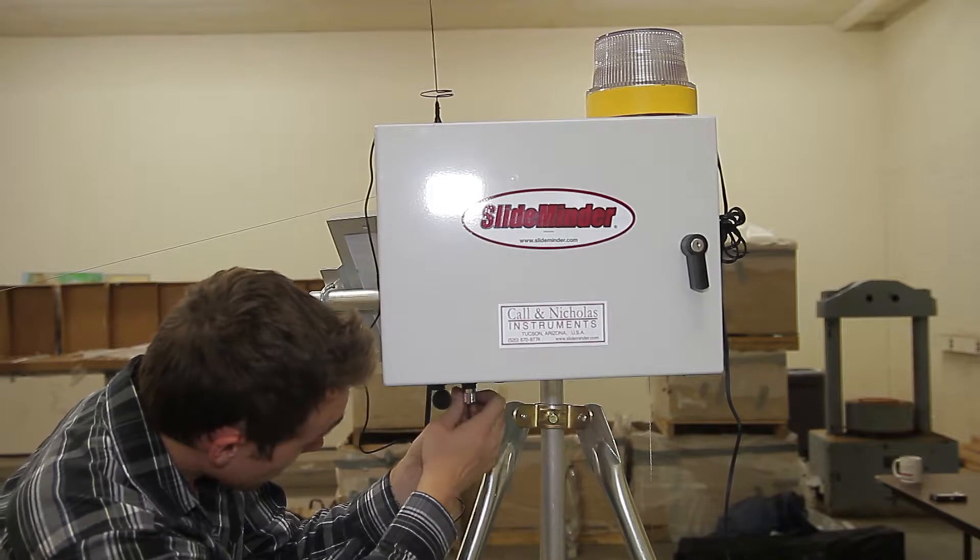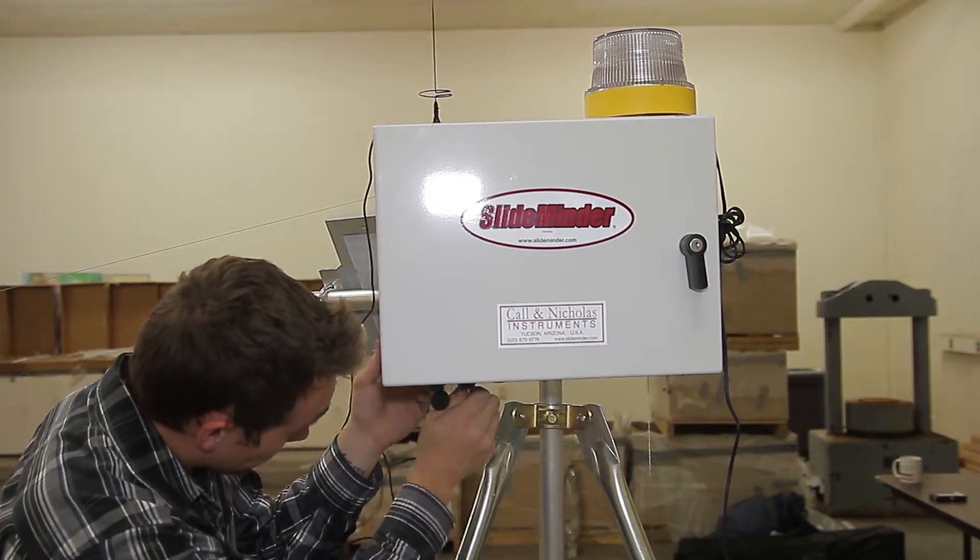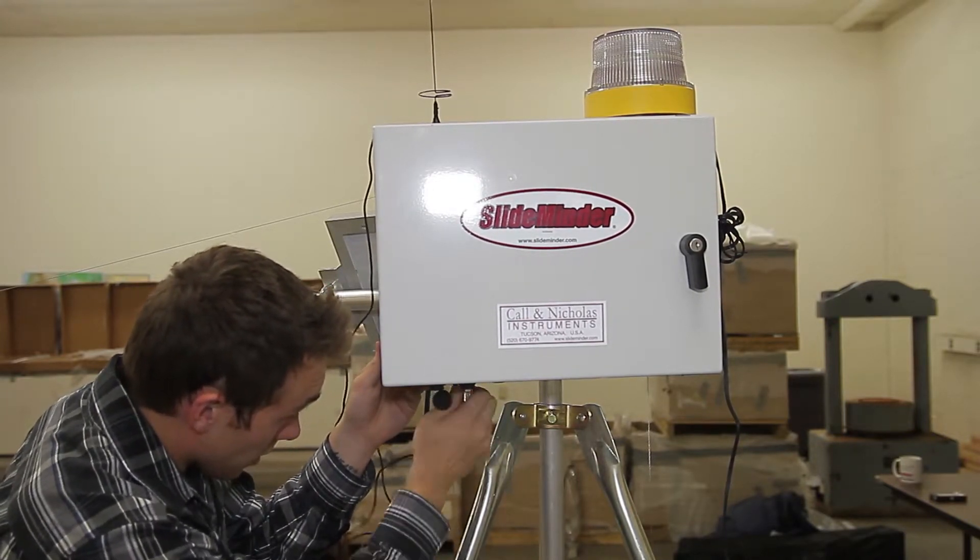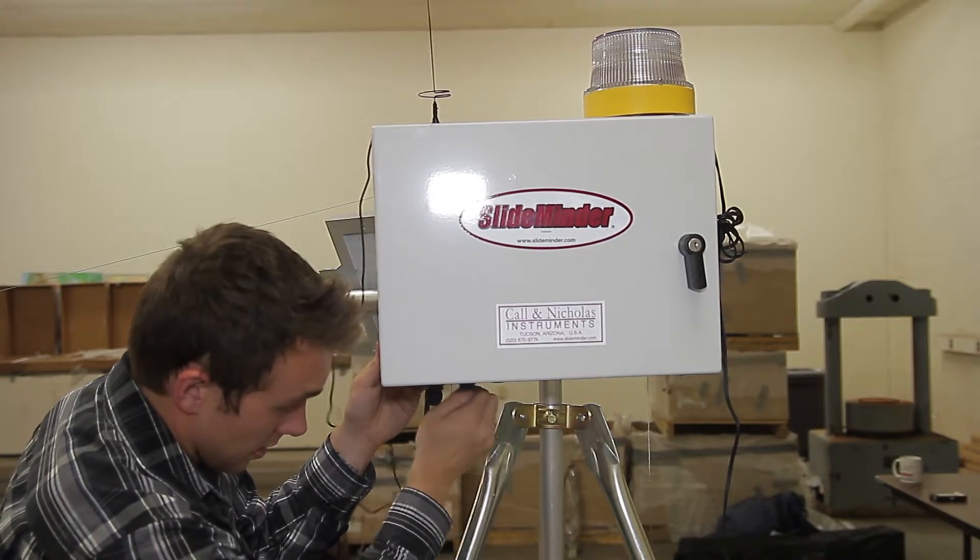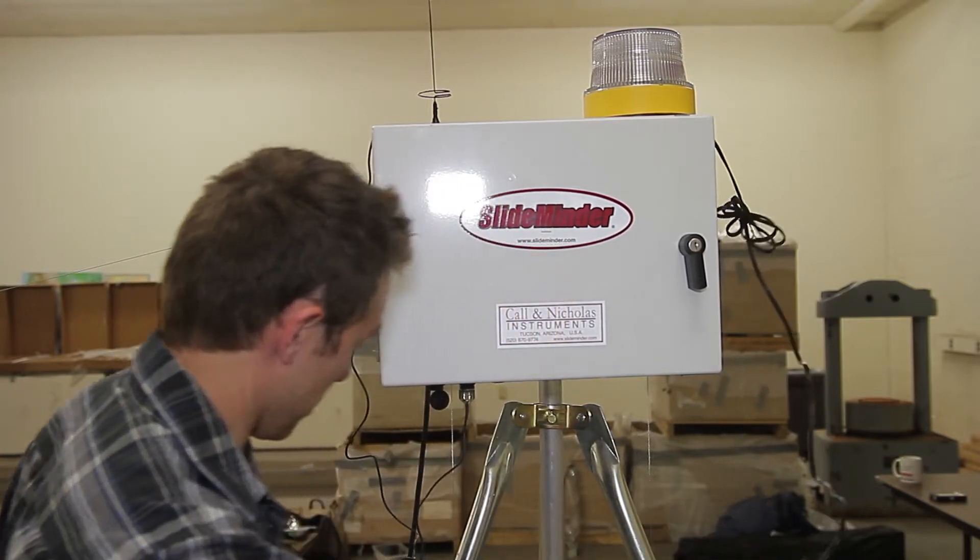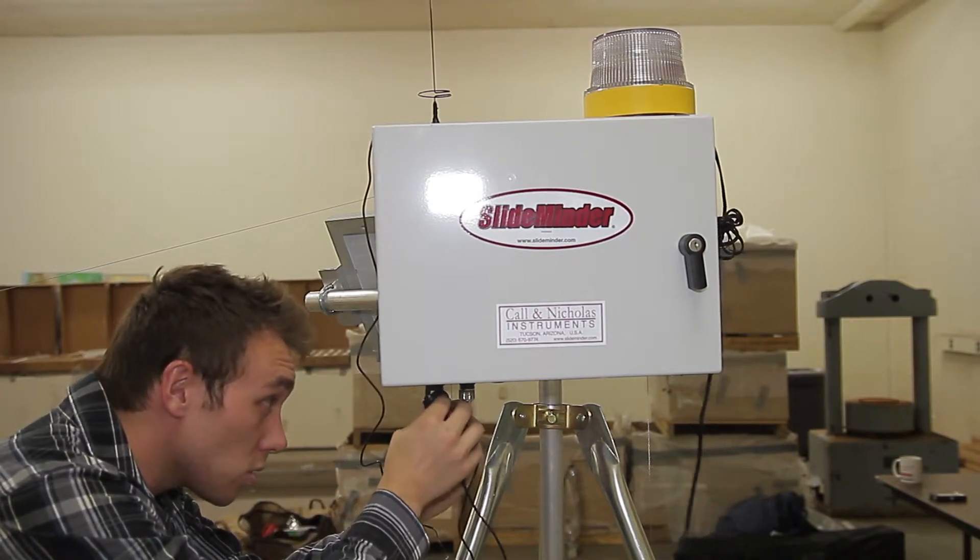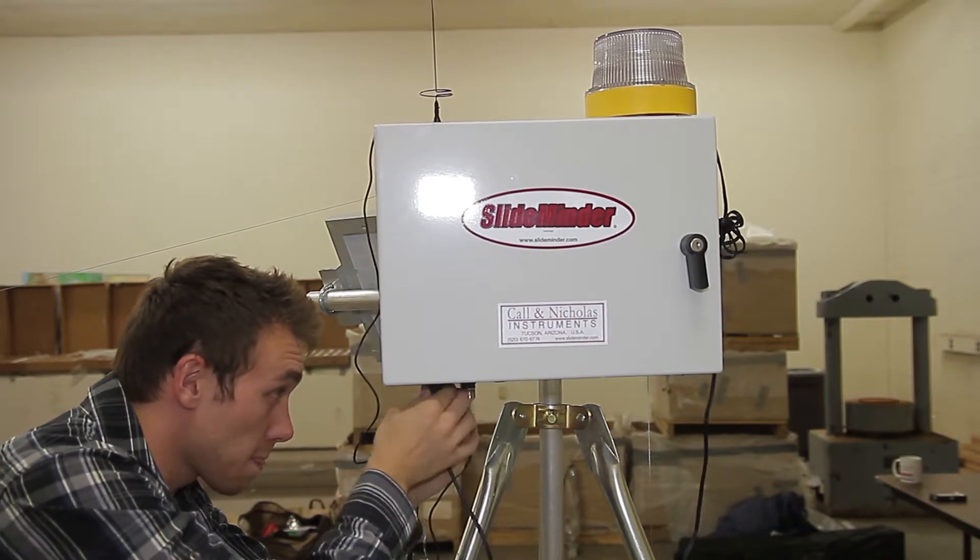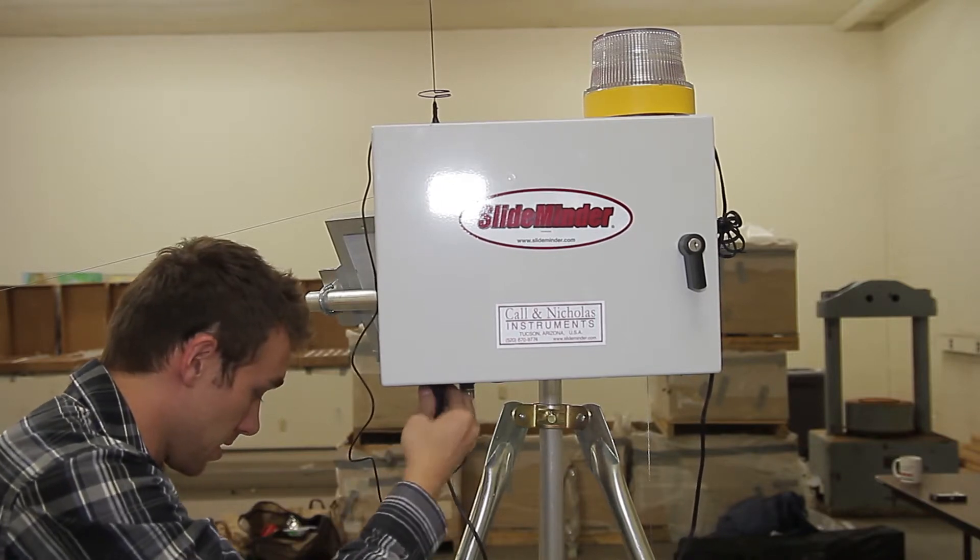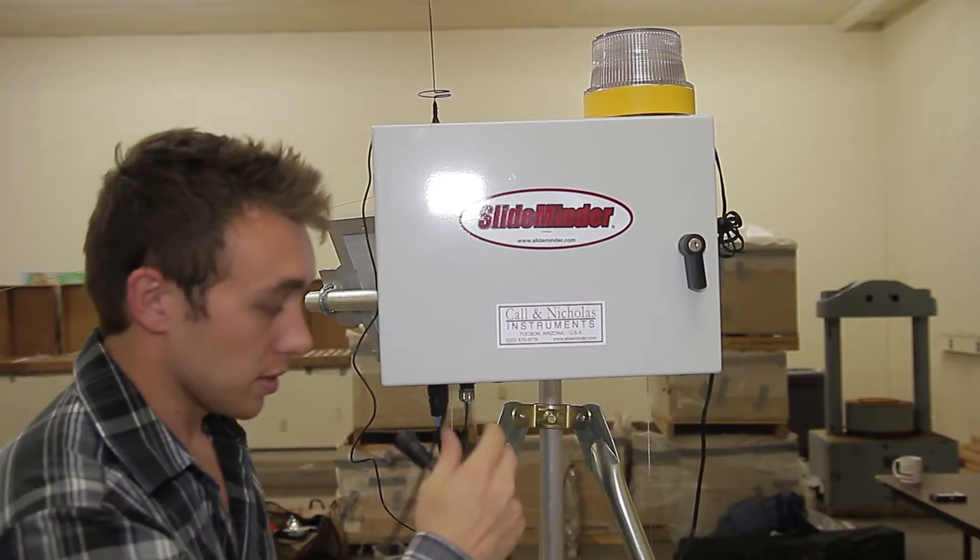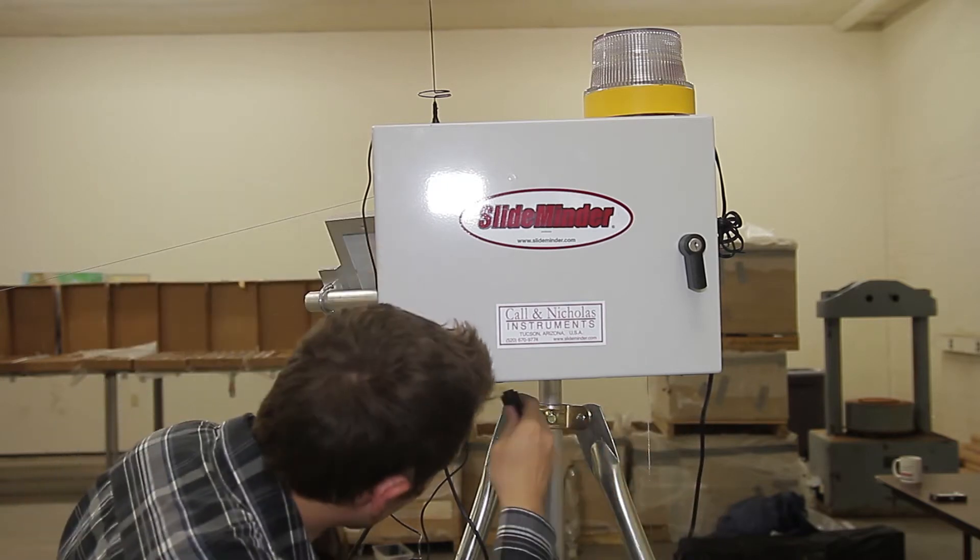Plug the antenna into the connector. Plug in the strobe. And plug in the solar panel.